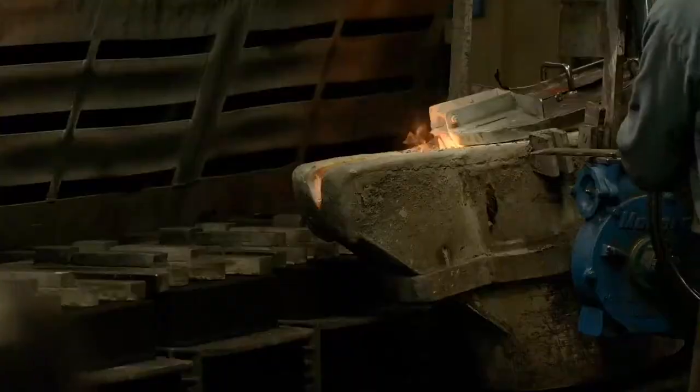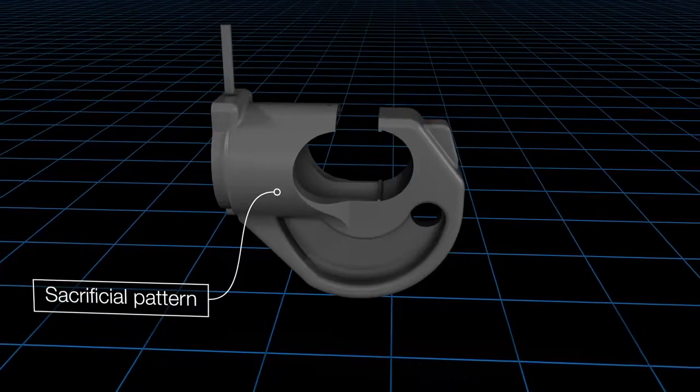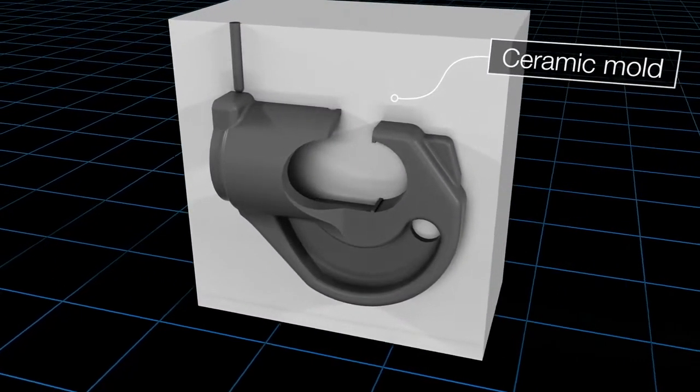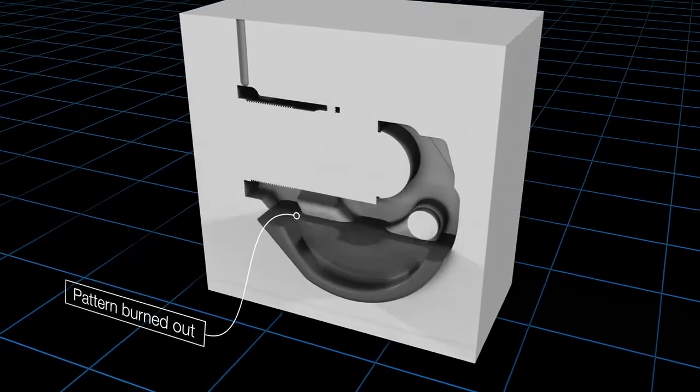Investment casting is a very traditional process of making metal parts. A pattern is created that's going to be sacrificial and then it's encased and dipped in ceramic, at which point the whole assembly is put into a furnace and the pattern is burned out.